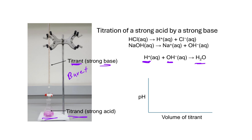If we place a pH electrode in the flask and measure pH as we add volume of titrant — as we add OH- — the pH doesn't increase very much at first. It will start to increase slowly, and then all of a sudden we see a sharp increase in pH, and then it flattens out again. This is our typical titration curve for the titration of a strong acid with a strong base.